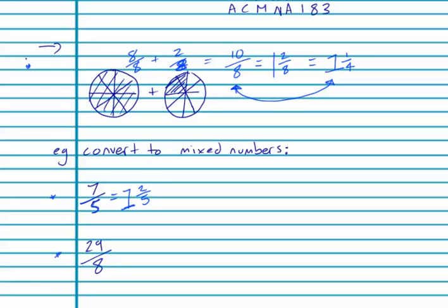Let's do it with another one, twenty-nine over eight. Well, twenty-nine divided by eight gives me three whole lots and three lots of eight is twenty-four. So I've got three whole lots of eight over eight. And a remainder of five says I've got five eighths left over.